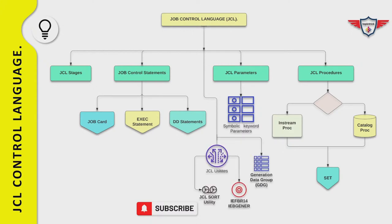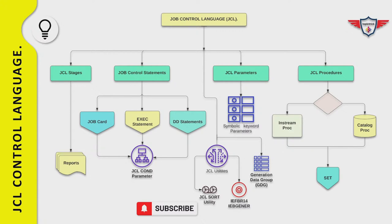In the later part of this JCL tutorial video, we will focus on JCL utilities such as JCL sort, IEBGENER, and IEFBR14. After that, we will focus on Generation Data Groups and why and where you use GDGs. The last section is dedicated to JCL tips and tricks, covering conditional job processing using the JCL COND parameter or IF-THEN-ELSE statement, and the difference between JCLLIB, STEPLIB, and JCLLIB order.